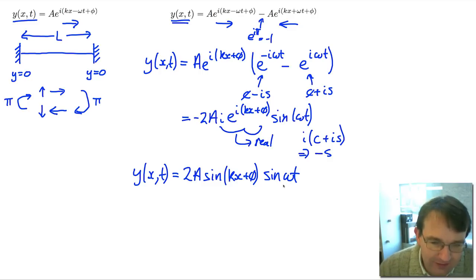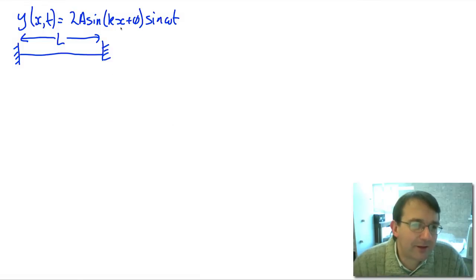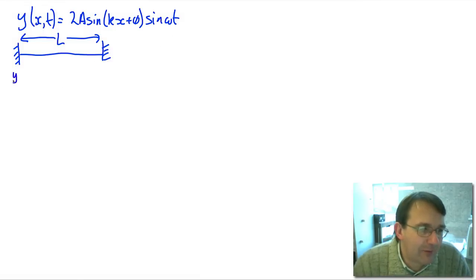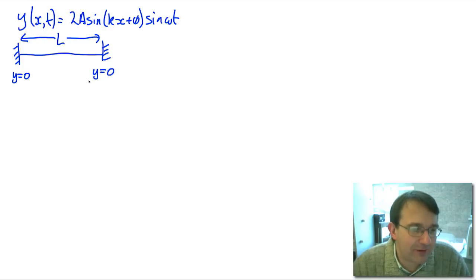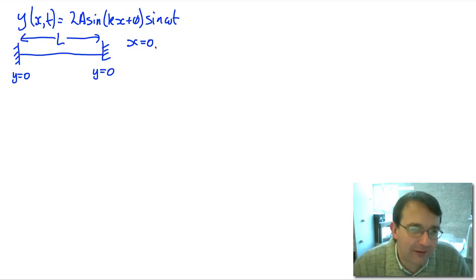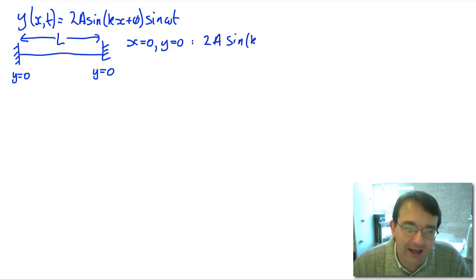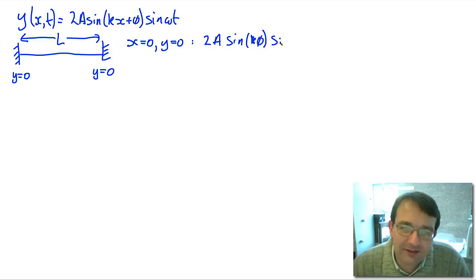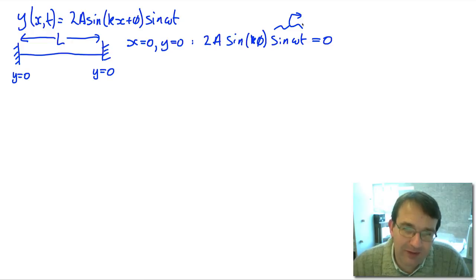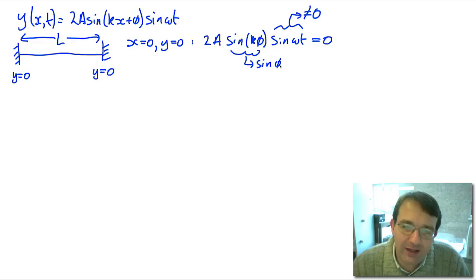Now let's apply our boundary conditions. We have the displacement as a function of position and time, and a string of length L with zero displacement at either end — closed boundaries. Applying the first boundary condition: when x equals zero, y must be zero. This gives 2A times sin(phi) times sin(omega t) must equal zero. Since sin(omega t) is generally not zero, we need sin(phi) to equal zero, which means phi must equal zero.